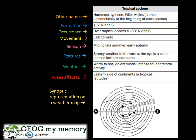Firstly, they have other names such as hurricane, typhoon, and willy-willies. They are named alphabetically at the beginning of each season. They are usually found at plus or minus five degrees north and south of the equator, and typically occur over tropical oceans between 5 and 30 degrees north and south. They move from east to west and are found during mid to late summer or early autumn.